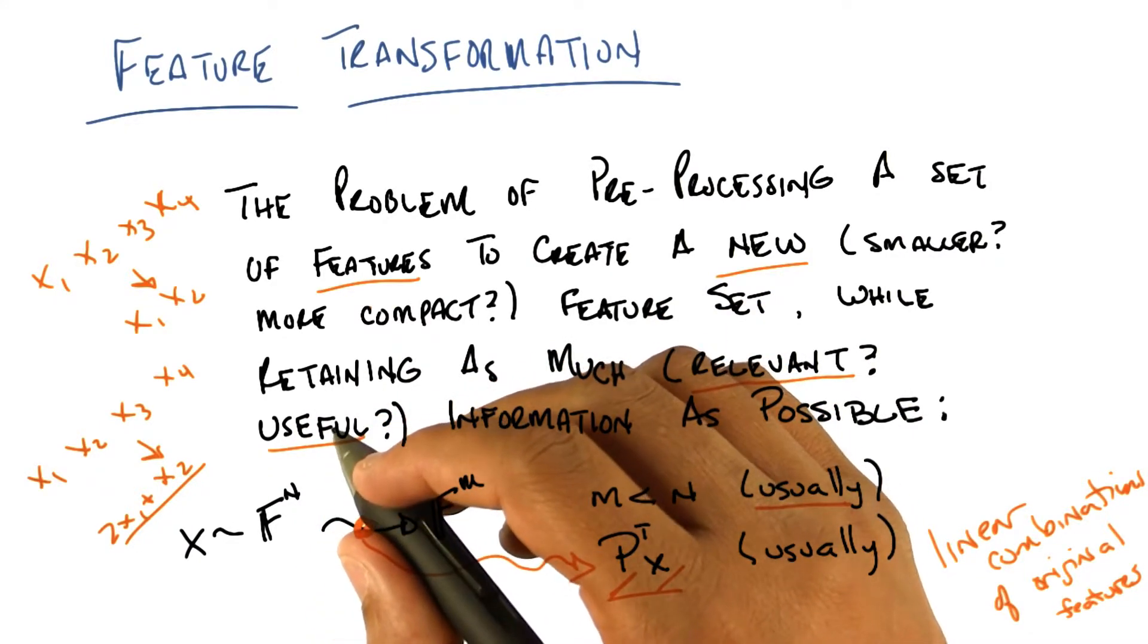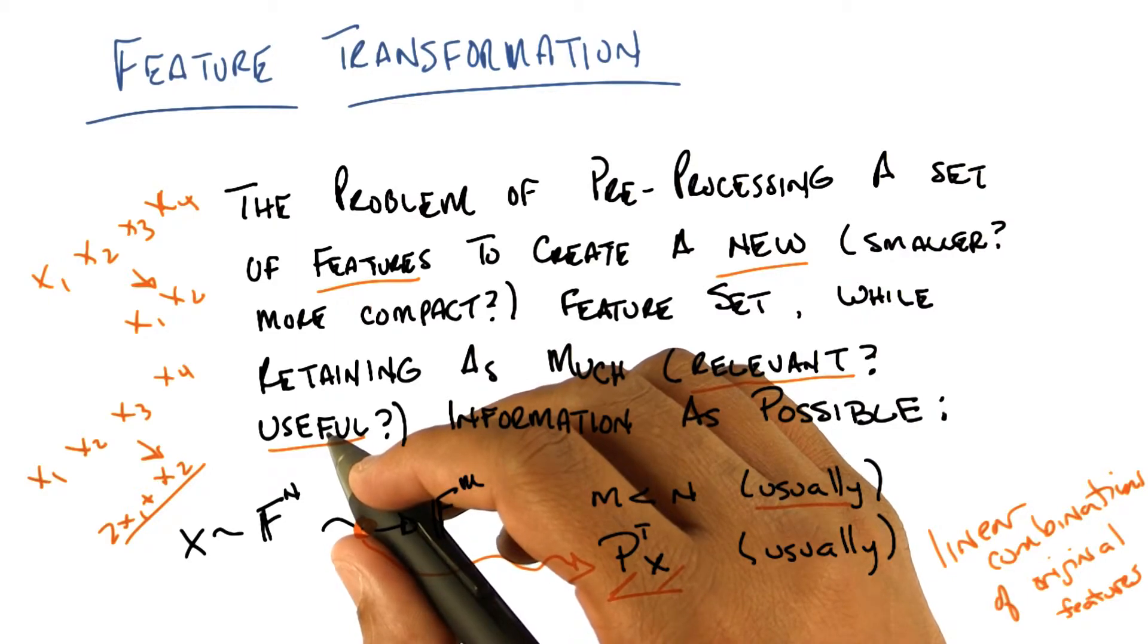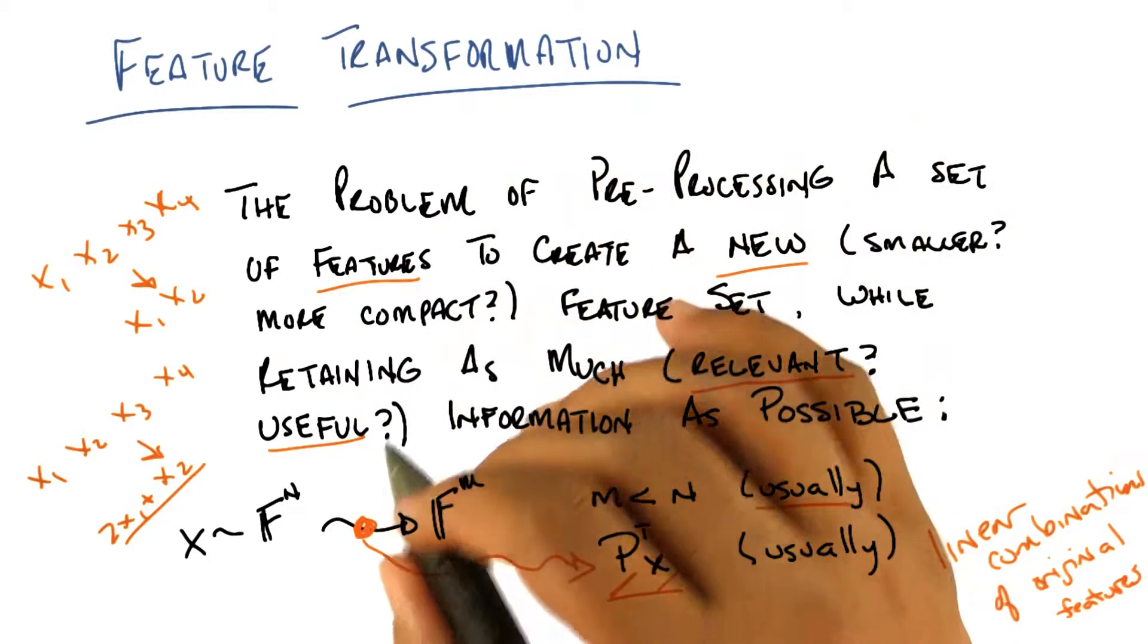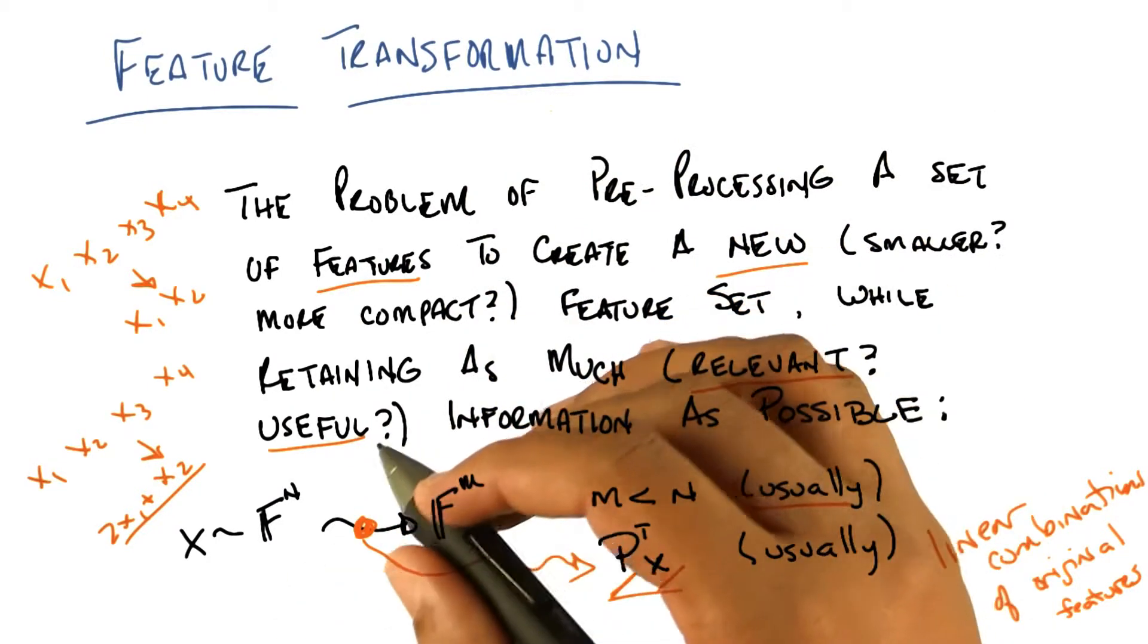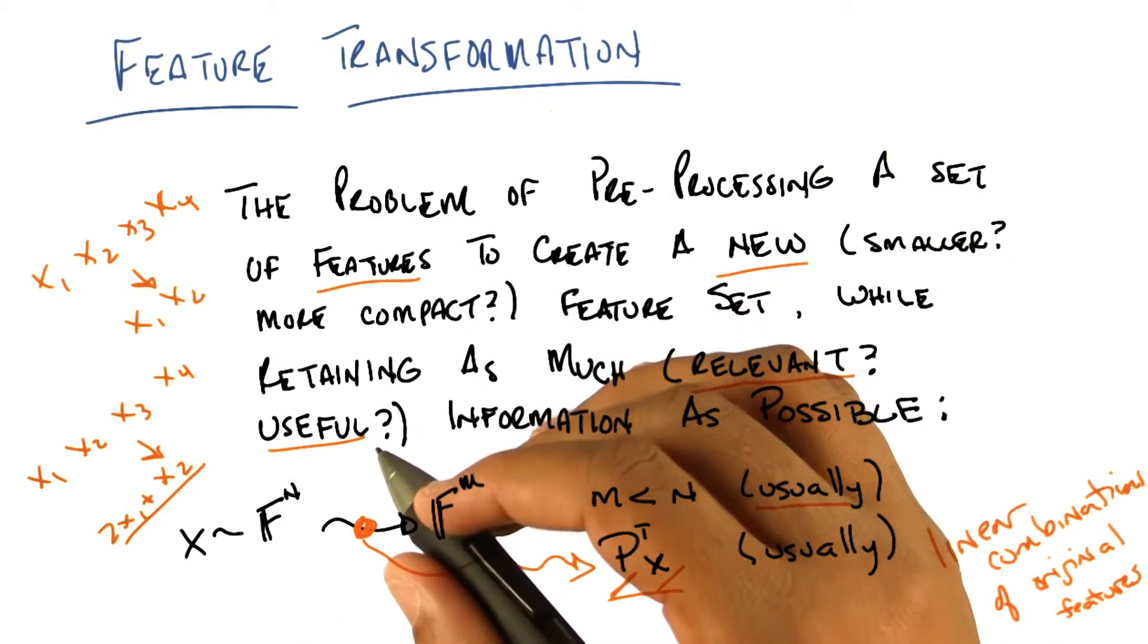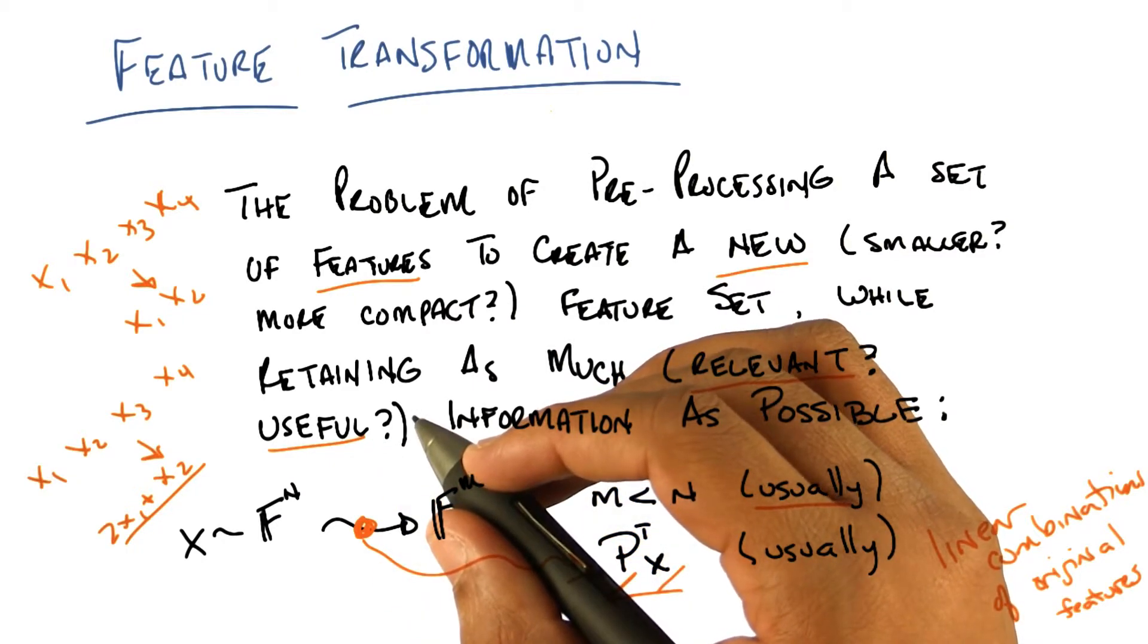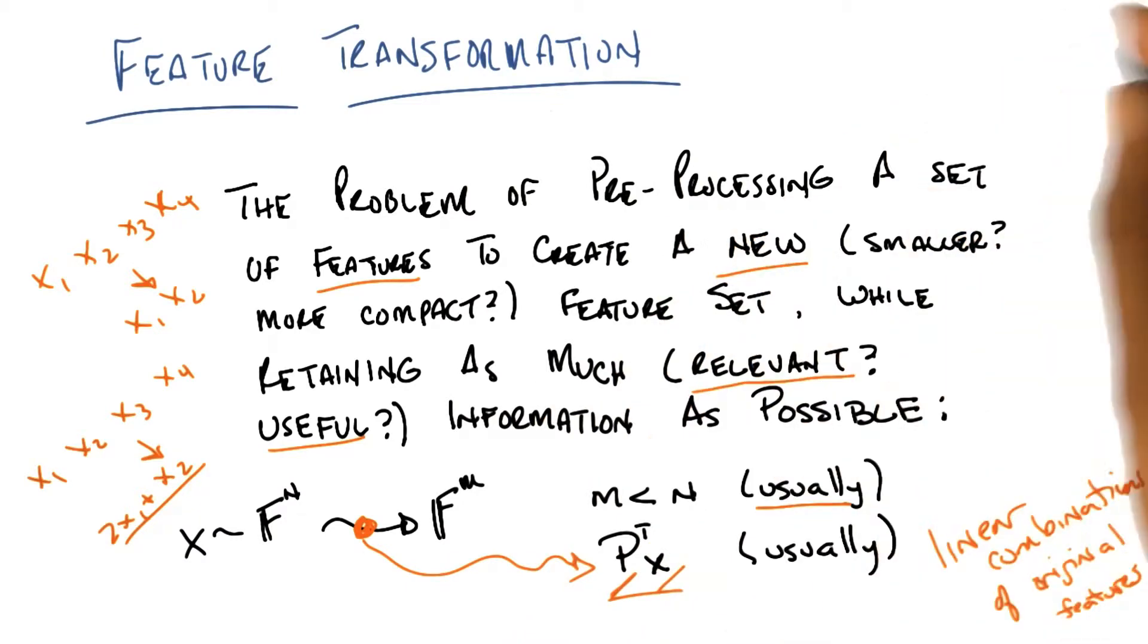When we talked about kernels? Yeah, although those were typically non-linear transformations. Implicit in the notion was doing a non-linear feature transformation. But we did it even before we learned about kernels. The very second thing I think we did. Perceptrons? How did perceptrons go into a higher dimensional space? Well, when we talked about XOR.